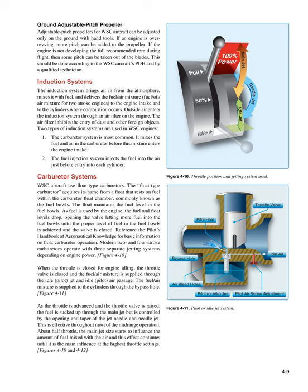WSC aircraft use float-type carburetors. The float-type carburetor acquires its name from a float that rests on fuel within the carburetor float chamber, commonly known as the fuel bowl. The float maintains the fuel level in the fuel bowl — as fuel is used by the engine, the fuel and float levels drop, opening a valve to let more fuel in until the proper level is achieved and the valve is closed. Modern two- and four-stroke carburetors operate with three separate jetting systems depending on engine power. When the throttle is closed for engine idling, the throttle valve is closed and the fuel/air mixture is supplied through the idle jet and idle air passage to the cylinders through the bypass hole.